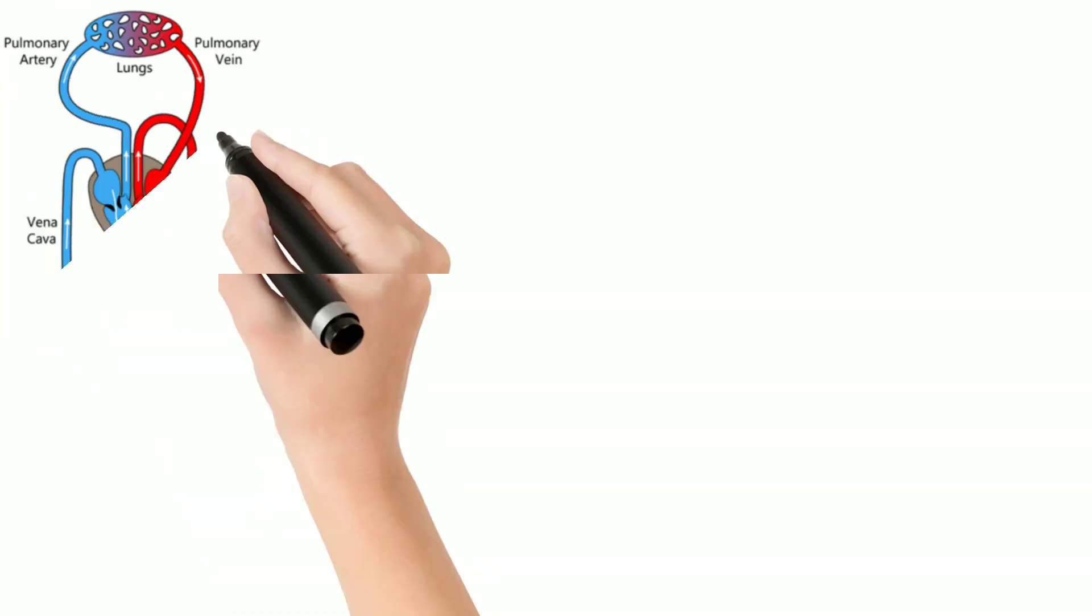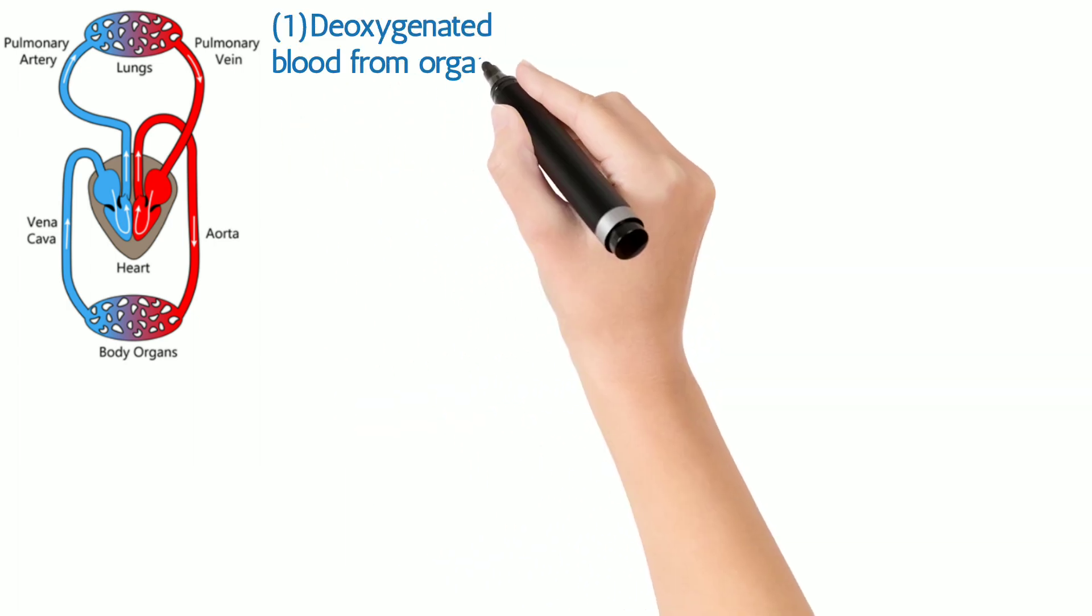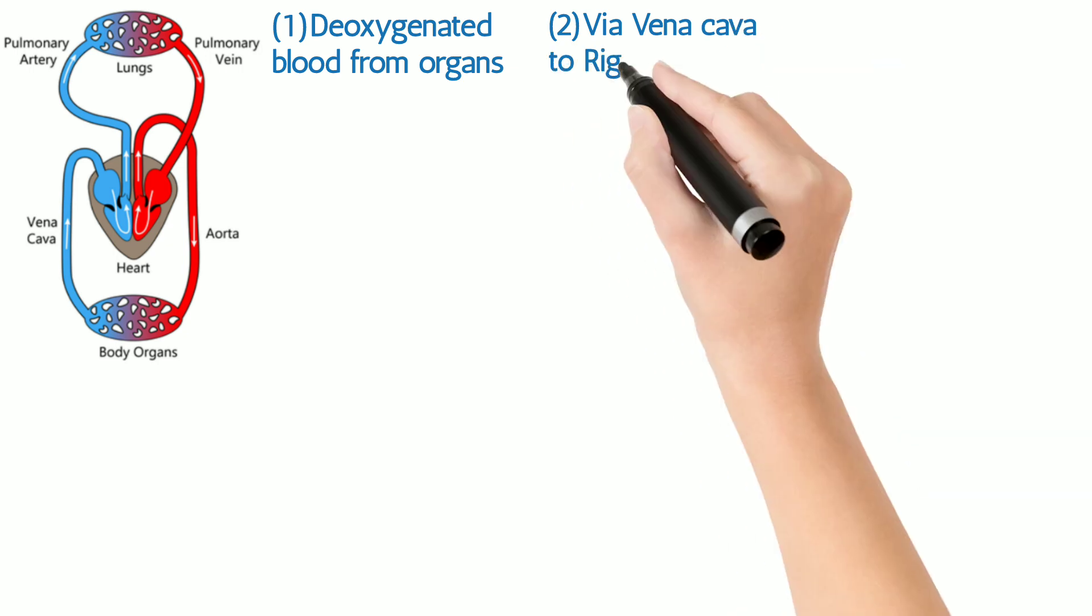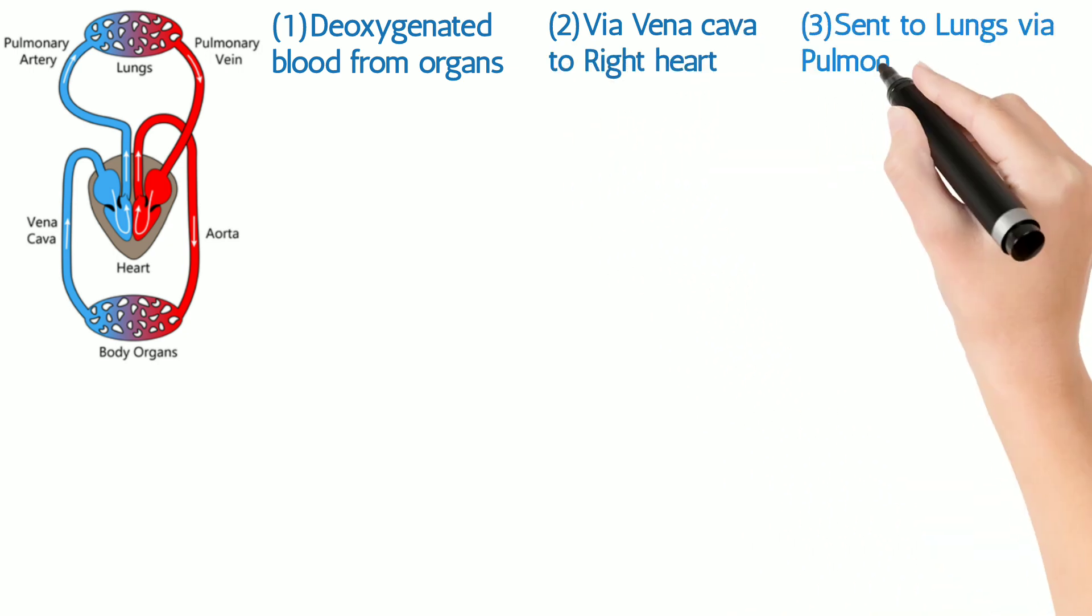Before everything, let's understand some basic concepts of cardiac conduction. In normal conditions, our heart receives deoxygenated blood from the body at the right atrium via vena cava, then sends it to the lungs for oxygenation via pulmonary artery.